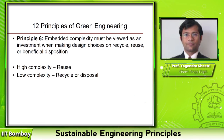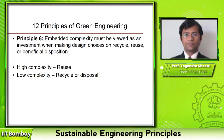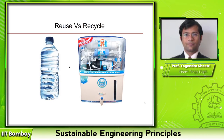The sixth principle says that the embedded complexity in a material must be viewed as an investment when making design choices on recycle, reuse, or beneficial disposal. Going back to the first example, the water purifier is a more complex product because it has multiple parts, different shapes and sizes, and different types of plastic materials. The PET bottle on the other hand is a single type of plastic with a very simple design — there is not much complexity in it.